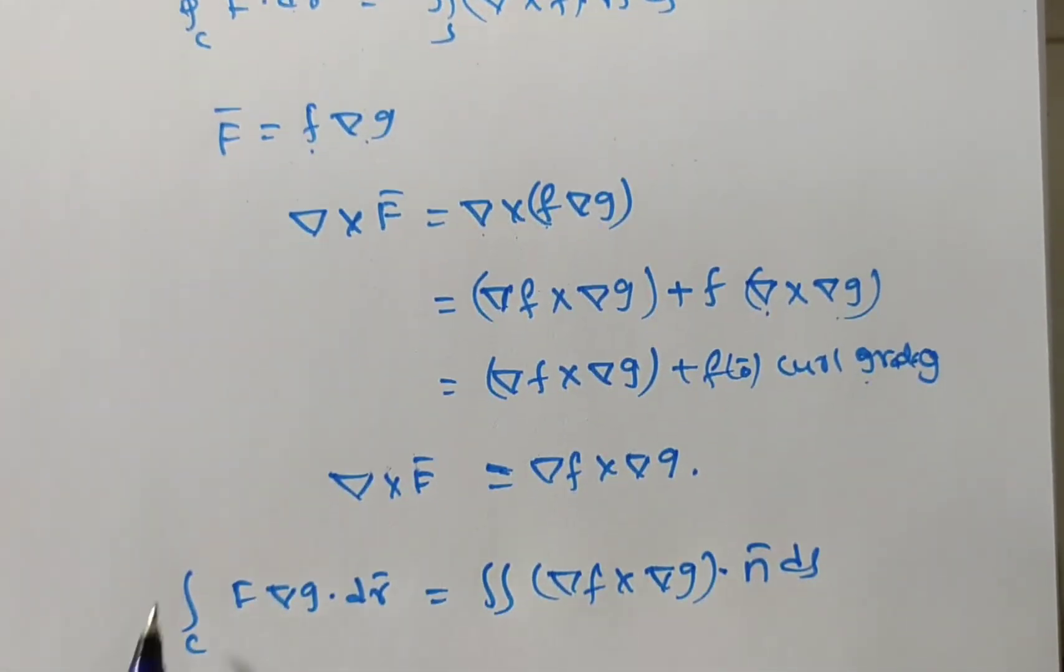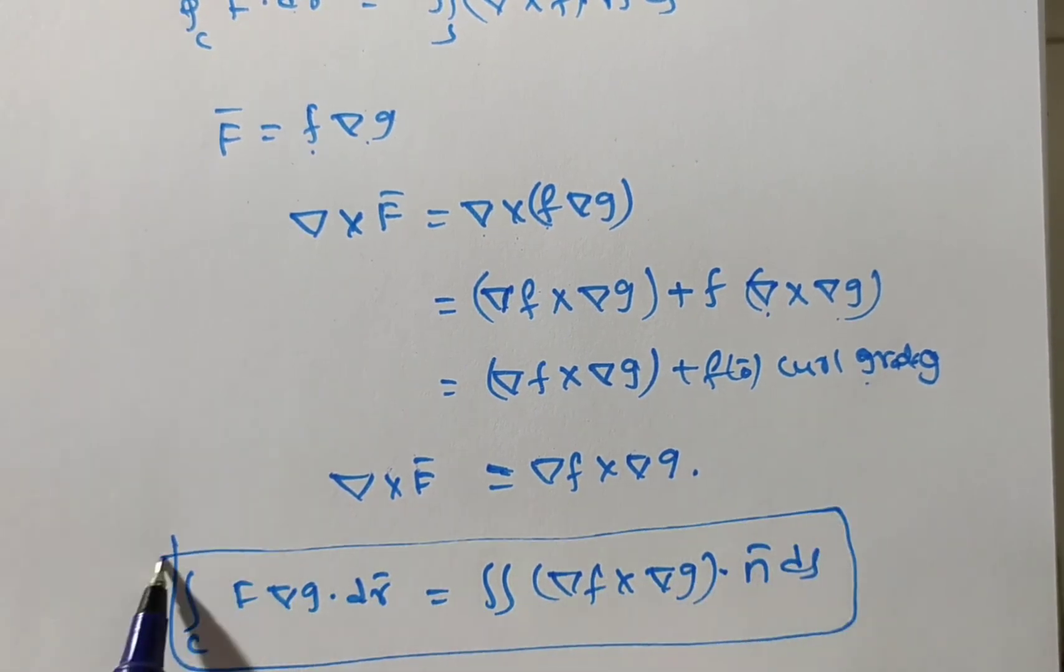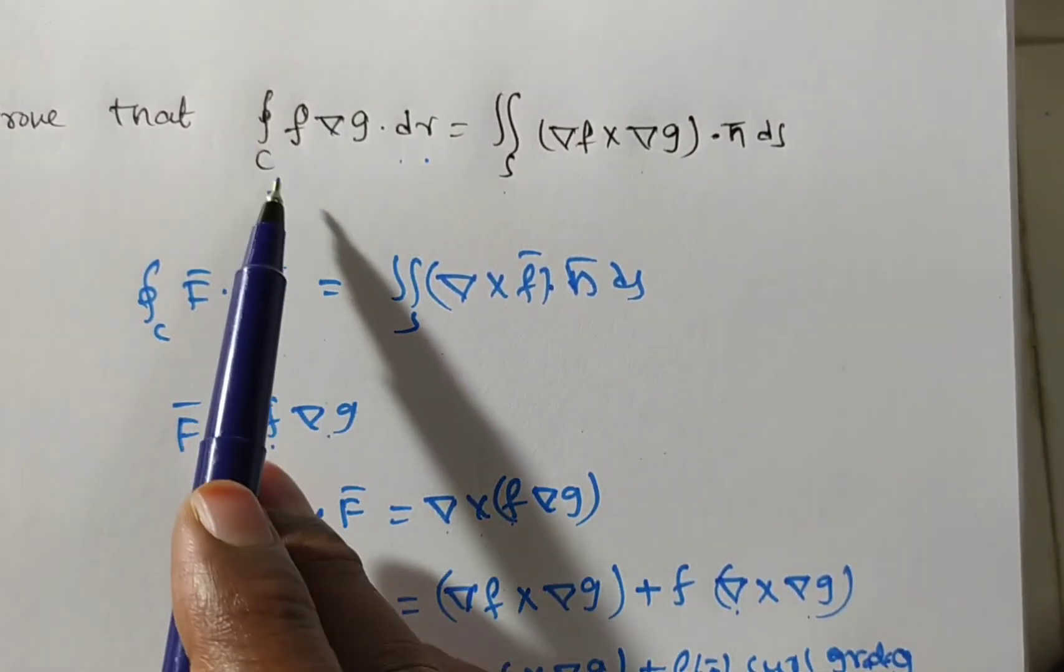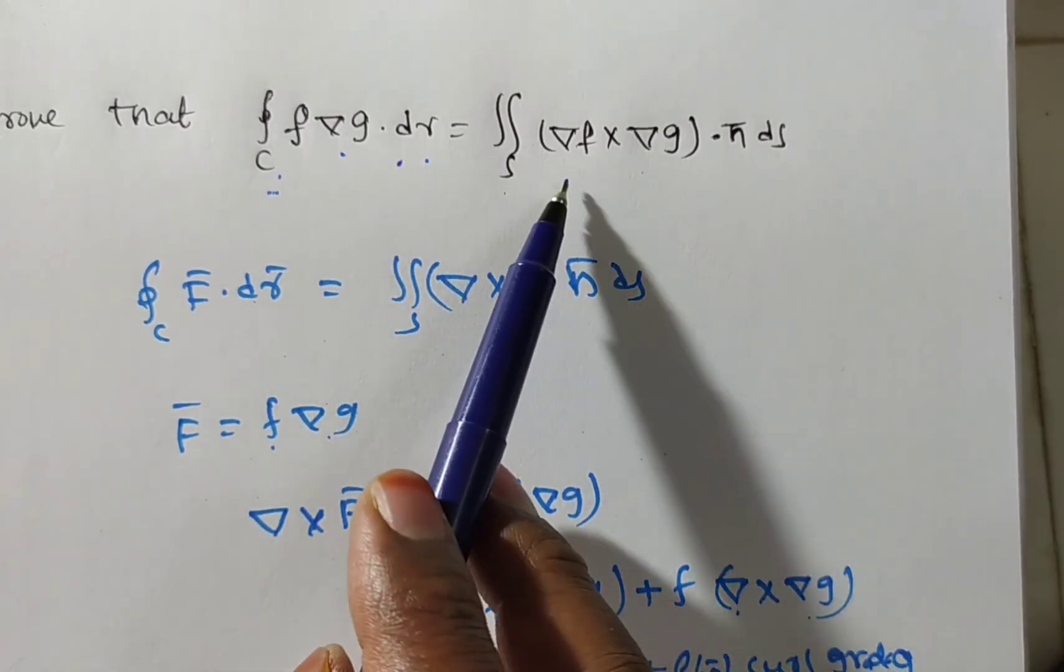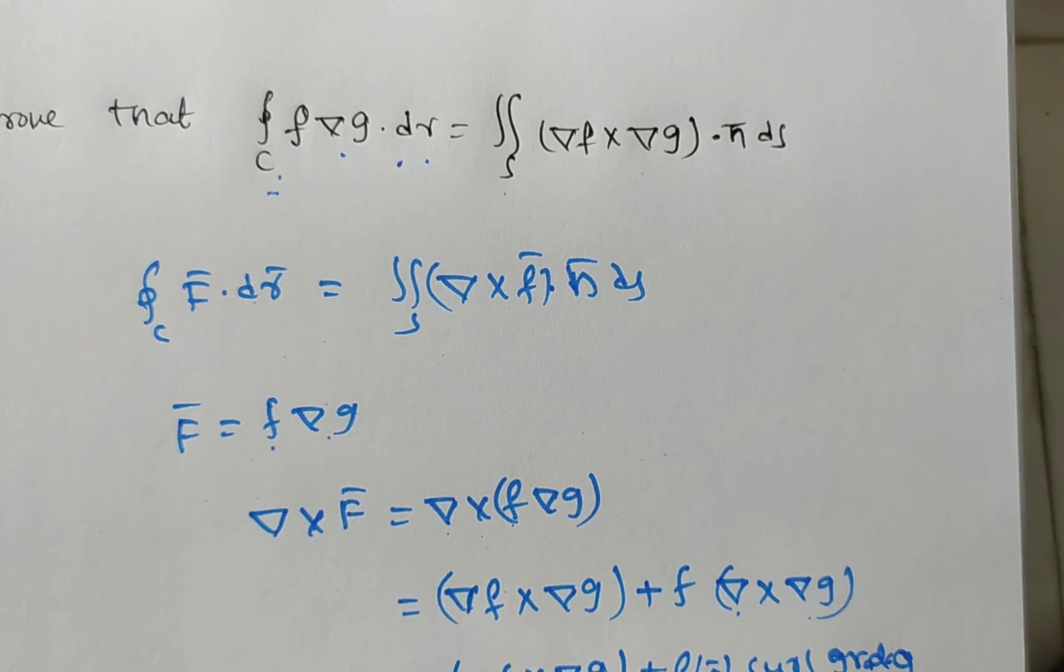That is it. You see this one only we have to prove or not. Check it. Integral over c f del g dot dr is equal to double integral over s del f cross del g dot n bar ds. Thank you for watching this video.